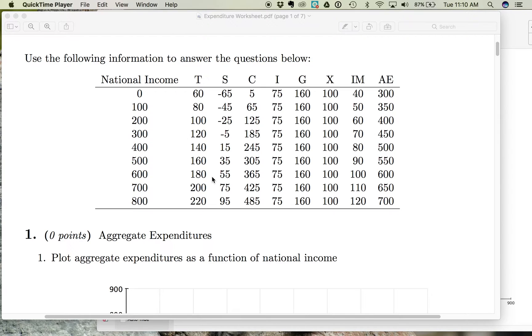So you can see here our example, and we have national income and we have government spending. Notice that when national income is zero, government spending is 160. As income increases, government spending doesn't change.